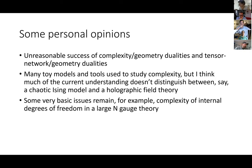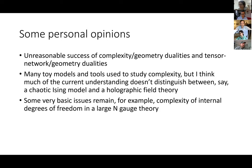Going all the way back to my first motivation — the complexity-geometry duality and growing wormholes — I sort of think it's fair to say that's been unreasonably successful. It kind of seems cartoony to say that complexity is literally equal to the action or volume of something, and yet it actually passes quite a few non-trivial checks. Part of that, to toot my own horn, is this tensor network geometry picture, which at least gives us a fairly crude understanding of why this kind of connection can make sense. But I think it works better than that, and we don't really understand why.